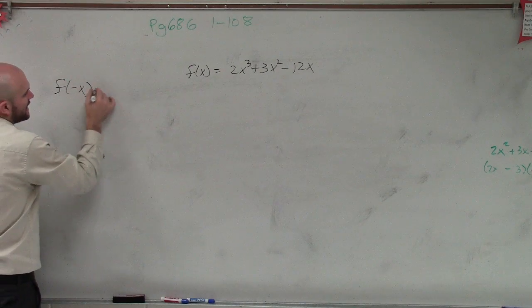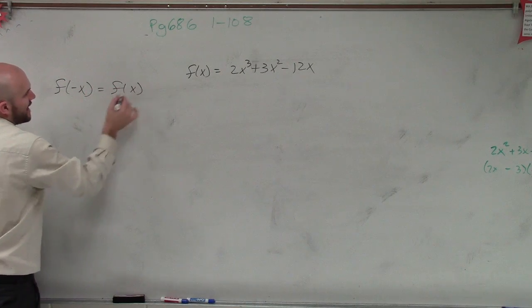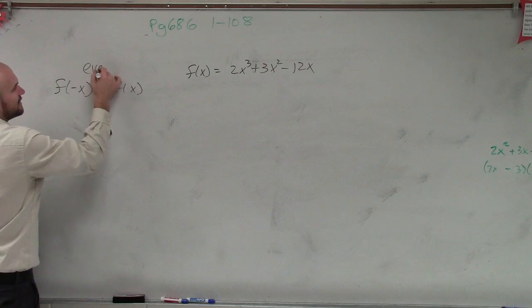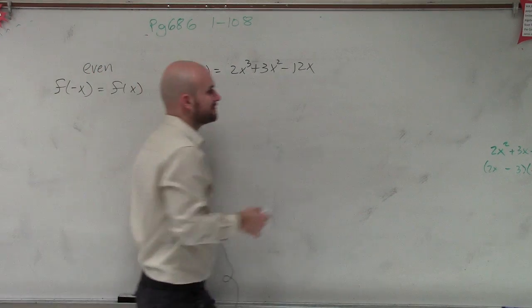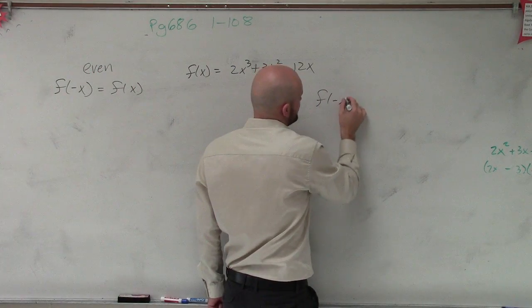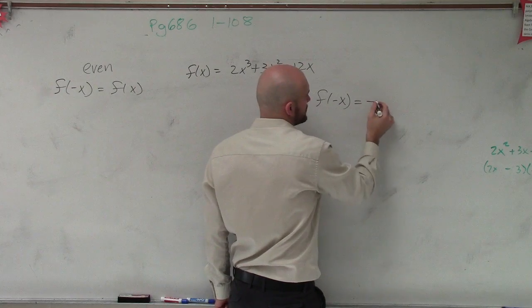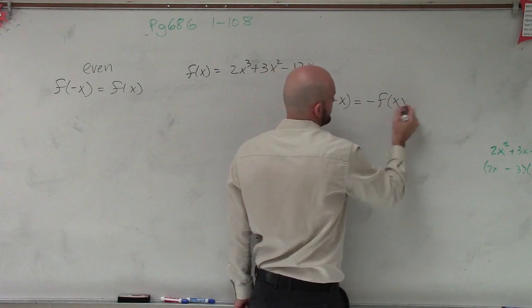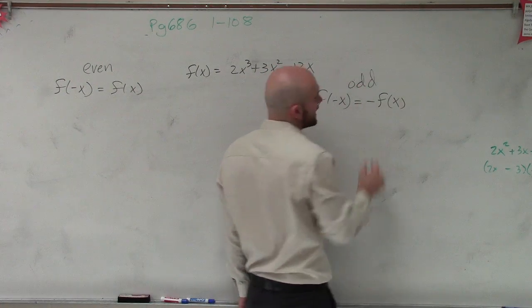If you apply f of negative x and you get back out f of x, your graph is even. If you plug in f of negative x and you get back out opposite of f of x, then your graph is odd.